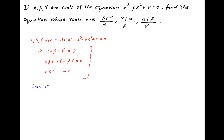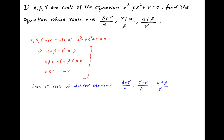We are interested in an equation whose roots are (beta + gamma)/alpha, (gamma + alpha)/beta, and (alpha + beta)/gamma. The sum of the roots of this desired equation is equal to (beta + gamma)/alpha + (gamma + alpha)/beta + (alpha + beta)/gamma.